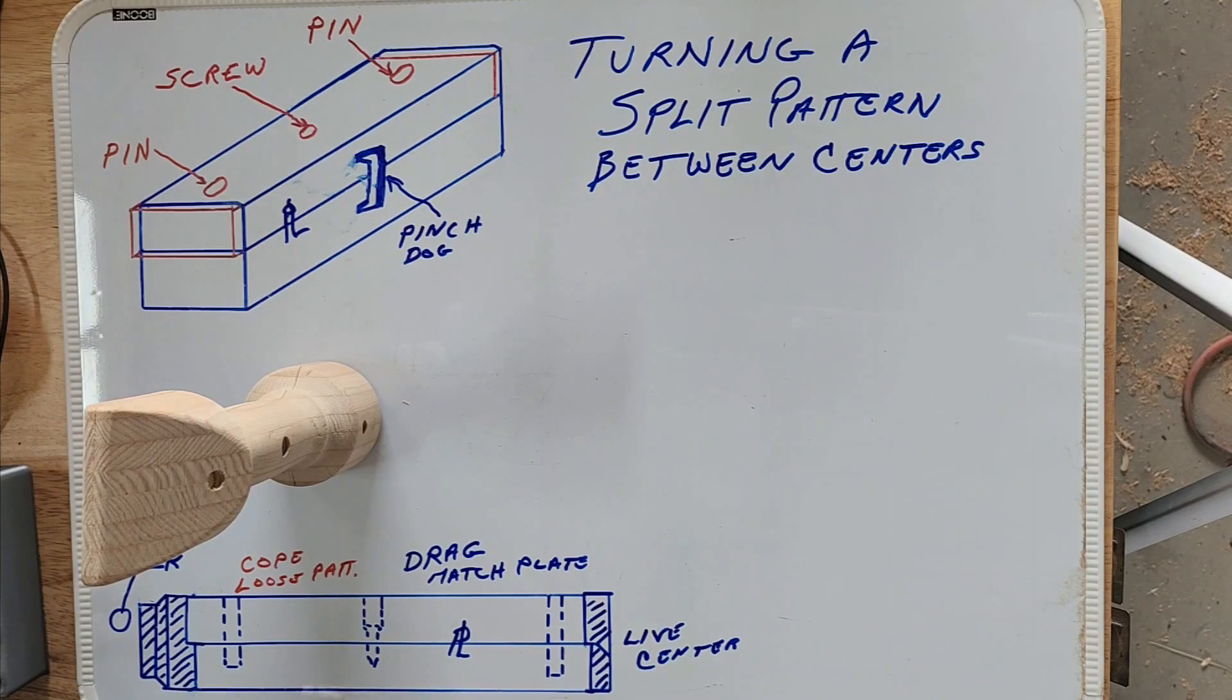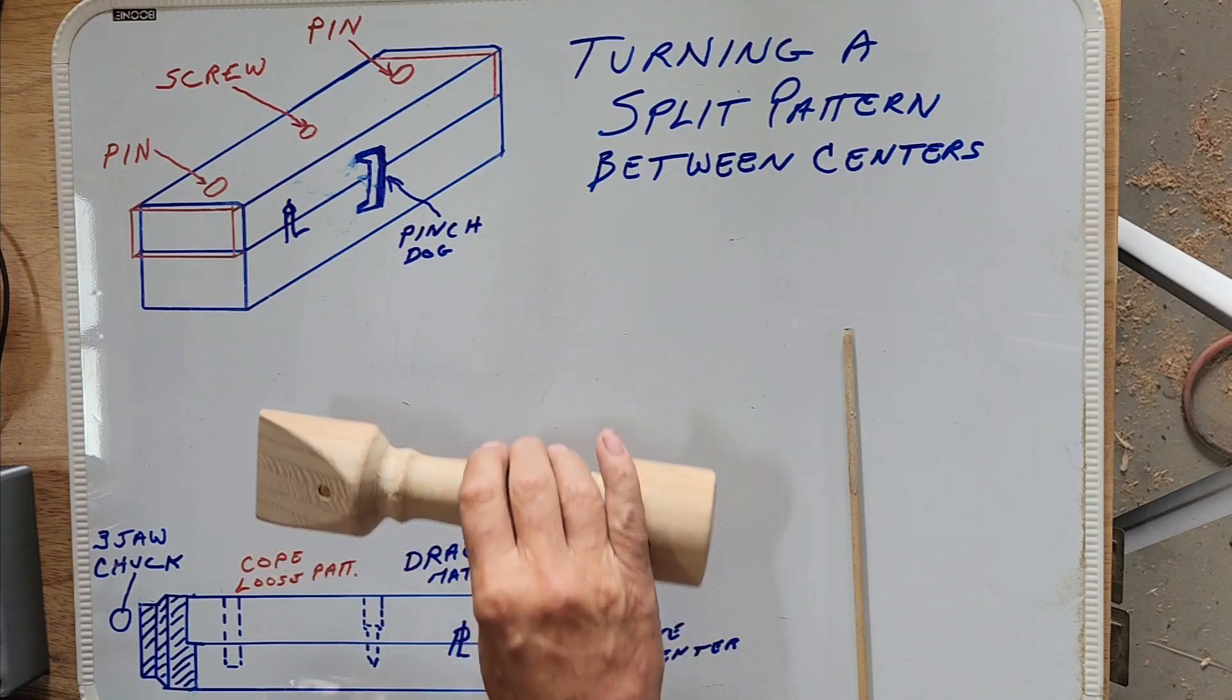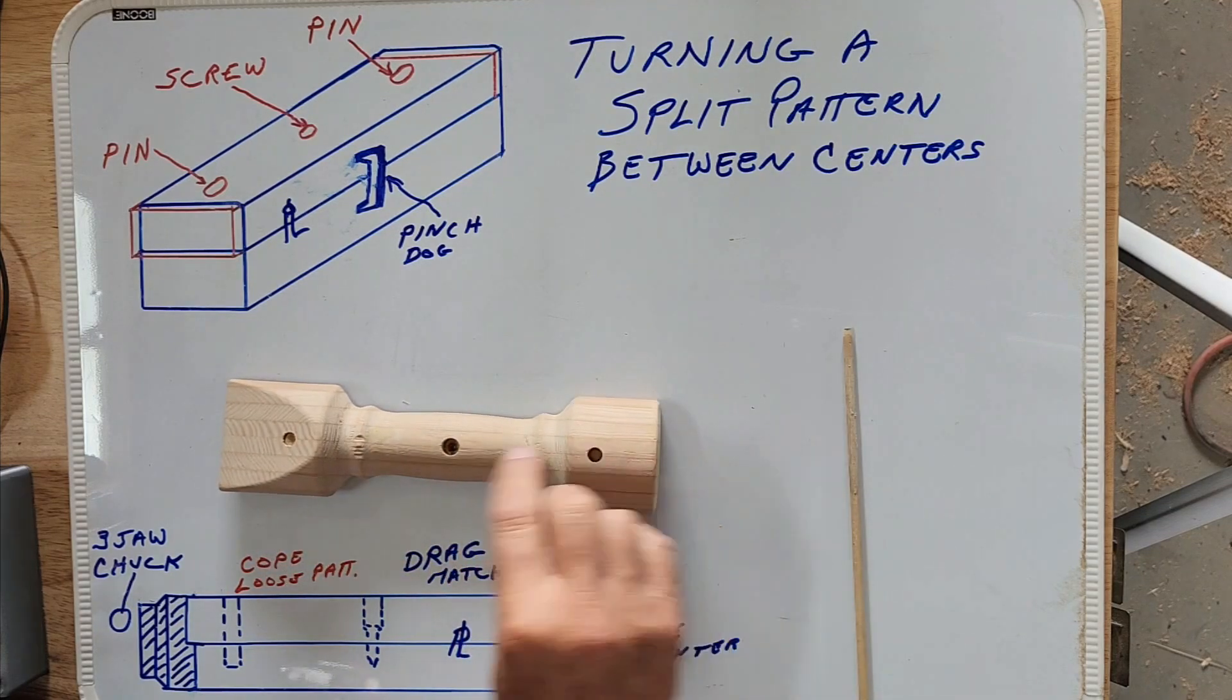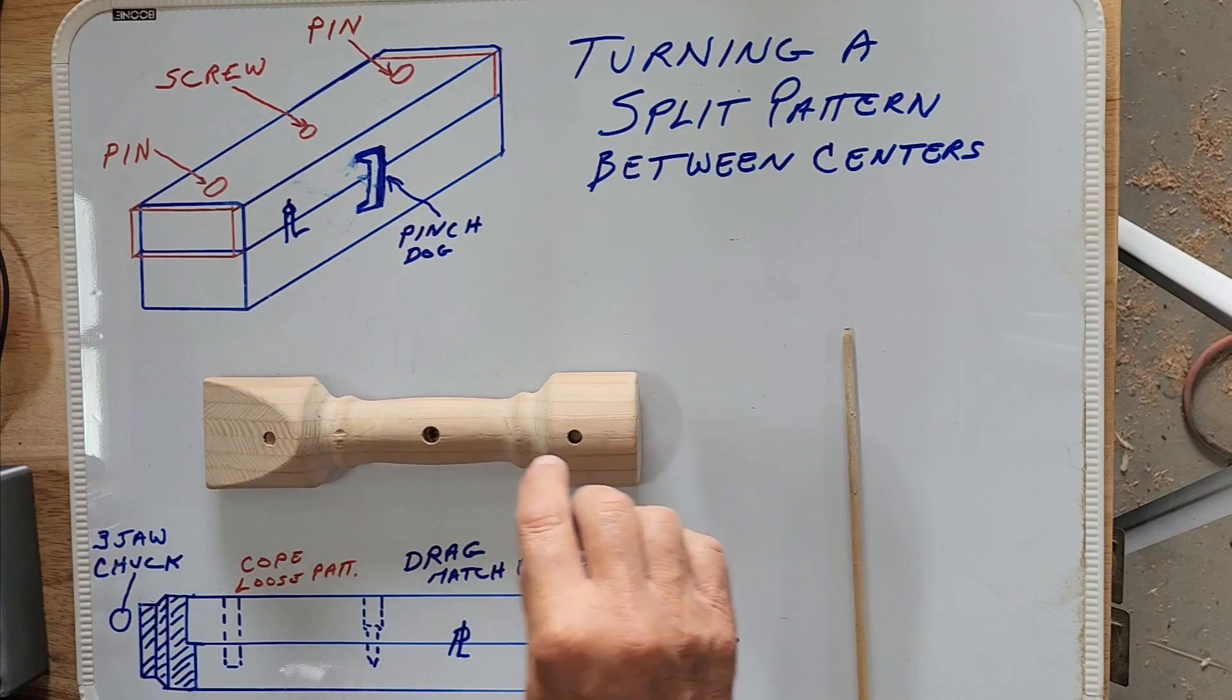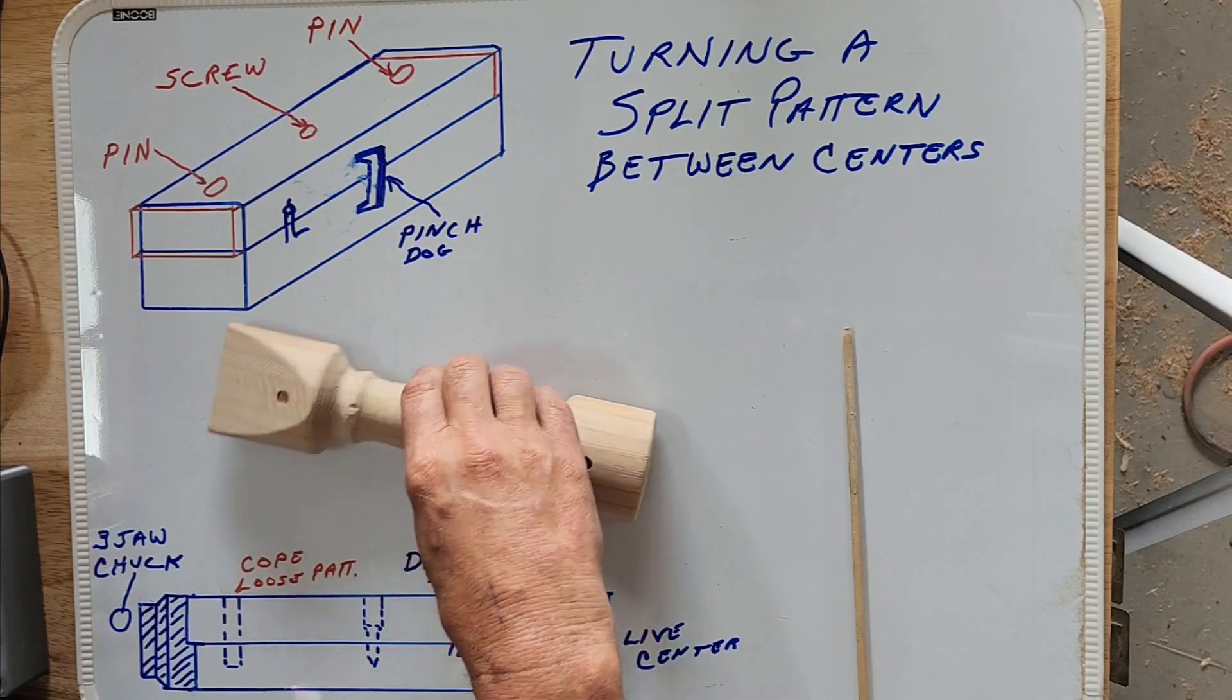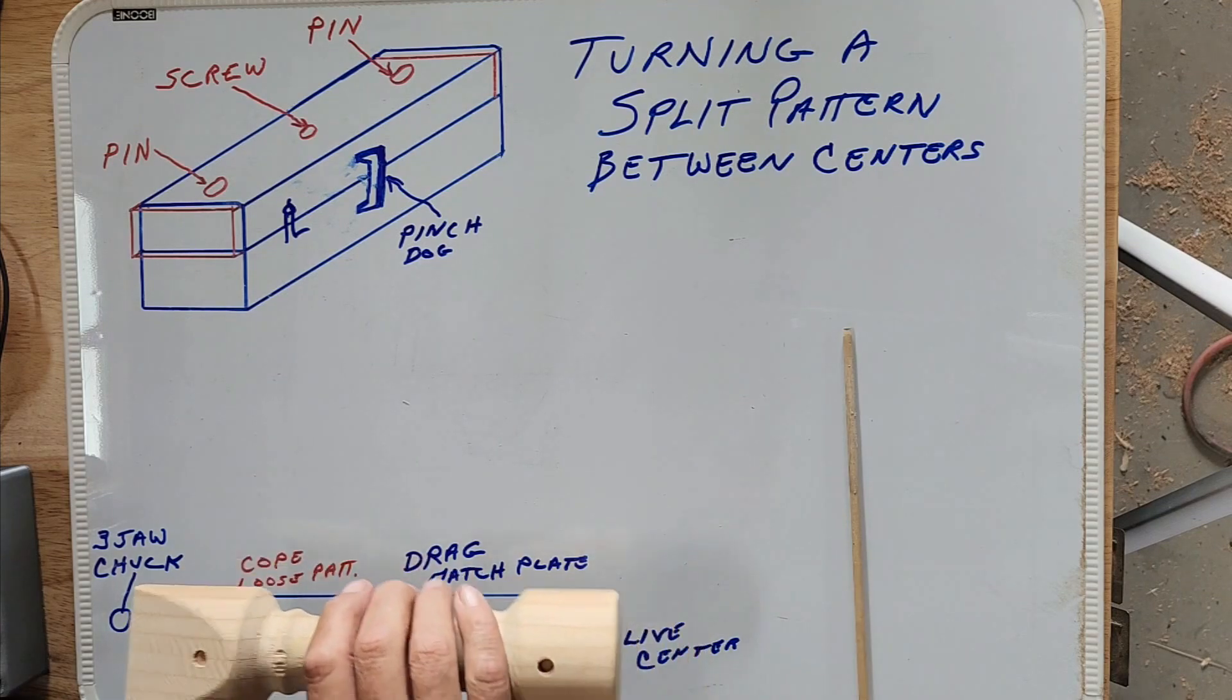The other side would be the cope. If you're going to do it as a loose pattern, this would be the cope side with the holes going all the way through, and the drag would be down here. The biggest reason is, when you take this apart and look at it, if you're going to put it on a match plate, you want these all the way through because this would be the drag pattern. You mount this side to a match plate, drill your holes through the board or match plate, and put your pins in the match plate and glue it together.